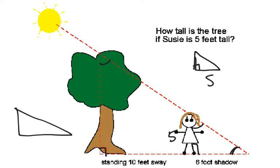So the tree standing 10 feet away casts 10 plus 6, or a 16-foot shadow. Susie casts a 6-foot shadow. We know she's 5 feet tall, and we need to know how tall is the tree.